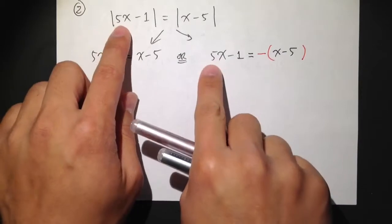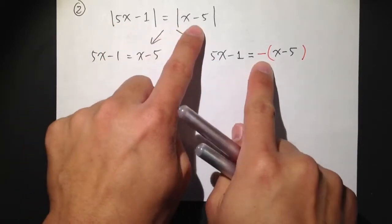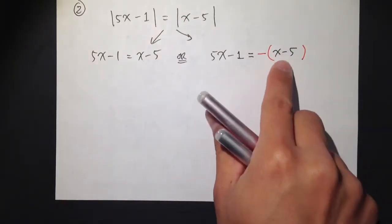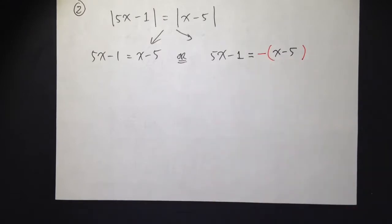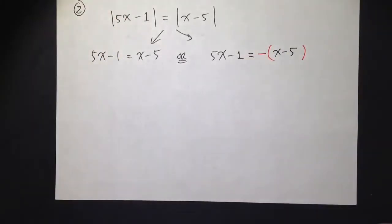So it will be the inside of the first absolute value, but that's equal to the negative of the second absolute value, the inside of the second absolute value, just like that. So two questions, get to work, solve it, we are done.